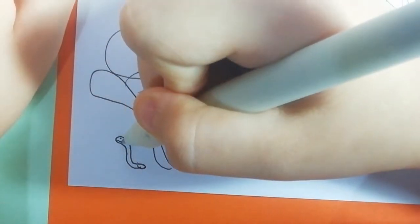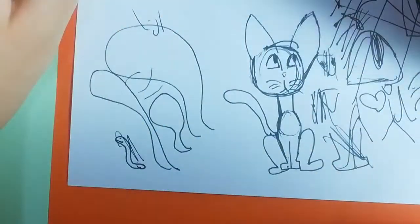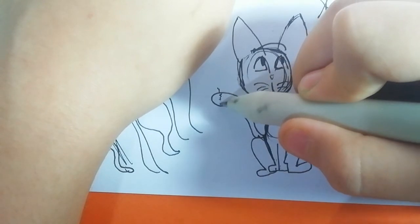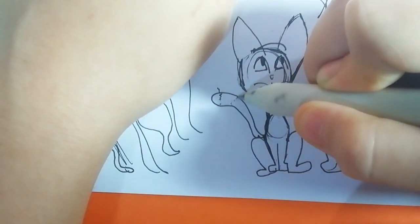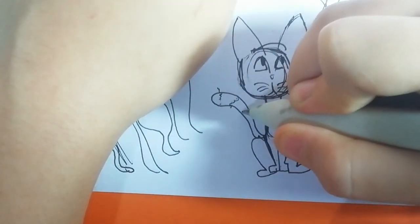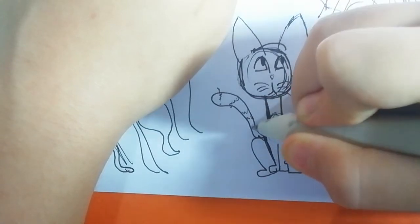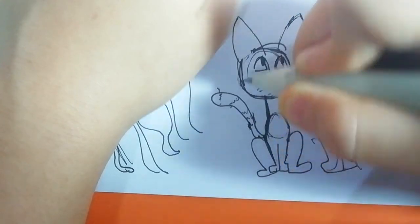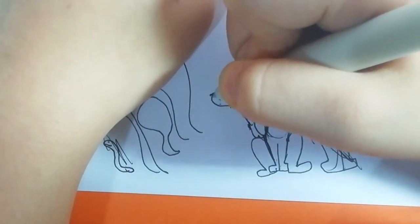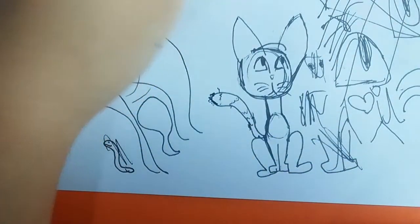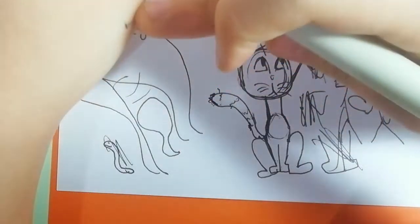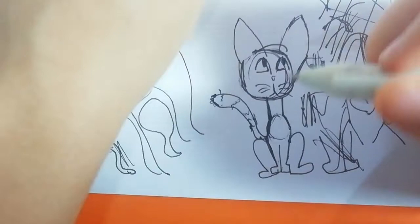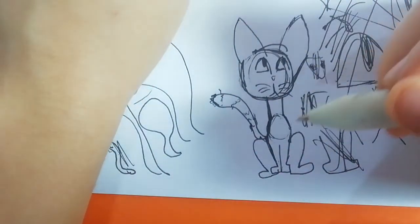Now we're just gonna do these to represent like tiger stripes or just to represent like little fur things, little fur. Got my hand dirty, that's fine. So now you have a cat.